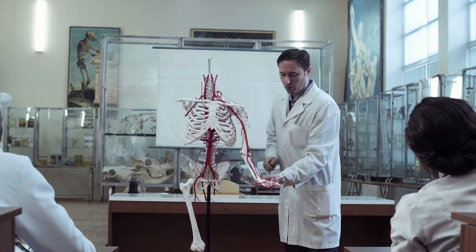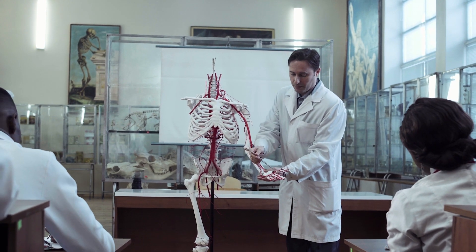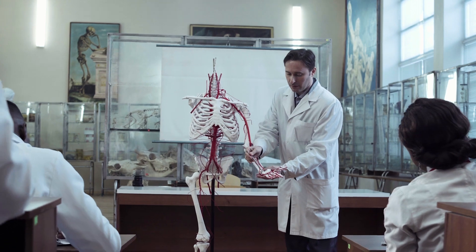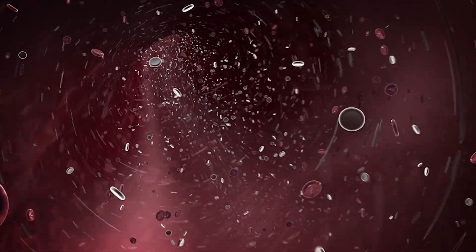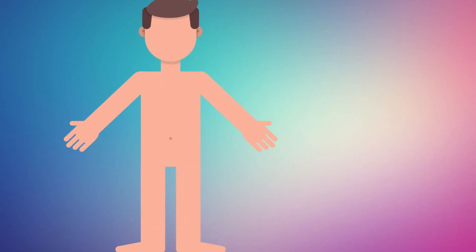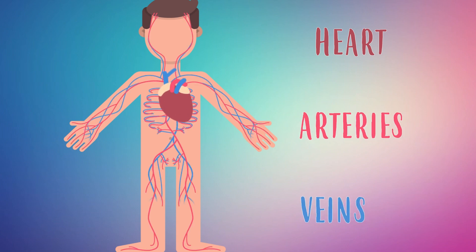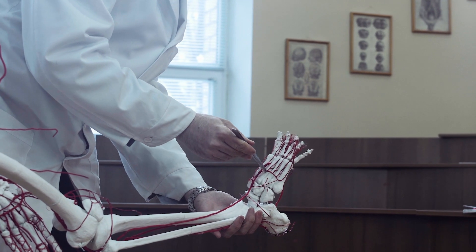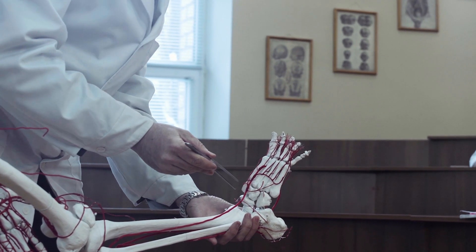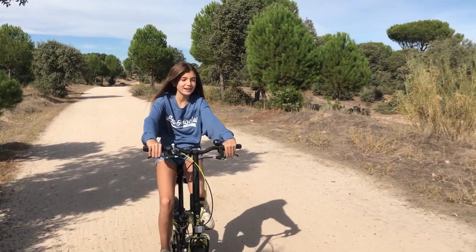The main function of the circulatory system is to carry through the blood the nutrients to the cells of our body. It is formed by the heart, arteries and veins, and its proper functioning is essential for us to have good health.